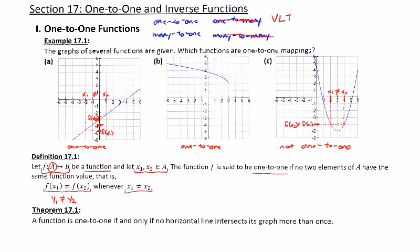Theorem 17.1 gives us a test like the vertical line test, called the Horizontal Line Test. The Horizontal Line Test is a direct consequence of Definition 17.1. It says a function is one-to-one if and only if no horizontal line intersects its graph more than once. If we start putting horizontal lines on these pictures, what kind of results are we going to get?